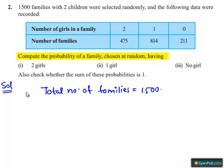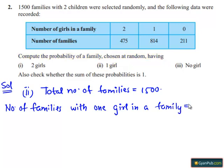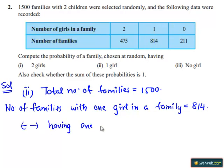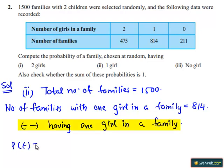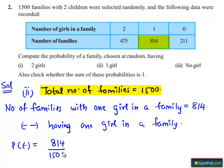Now let us see the second part. Number of families with one girl in a family equals 814. Let E be the event of having one girl in a family. Then P(E) equals 814 divided by 1500, which is 407/750.